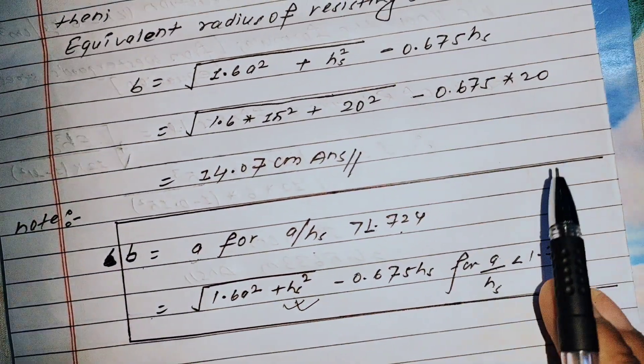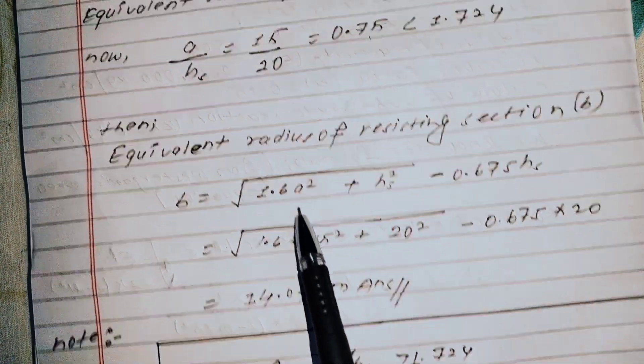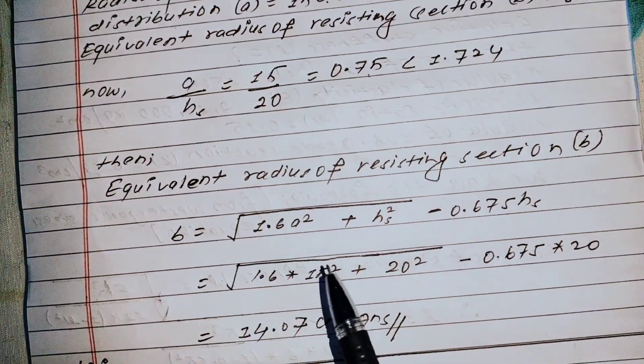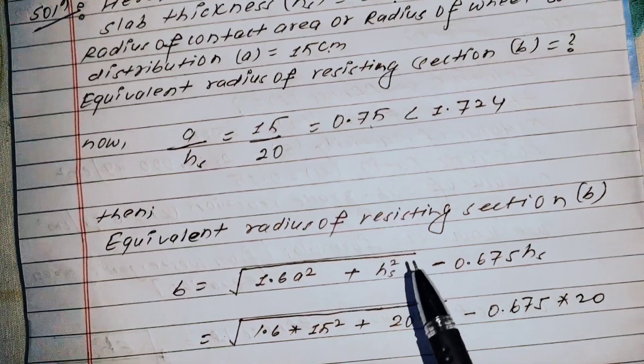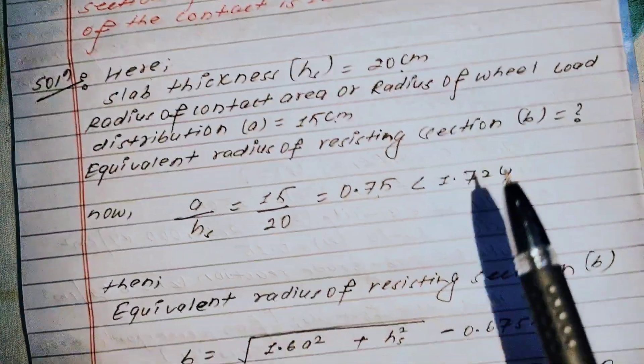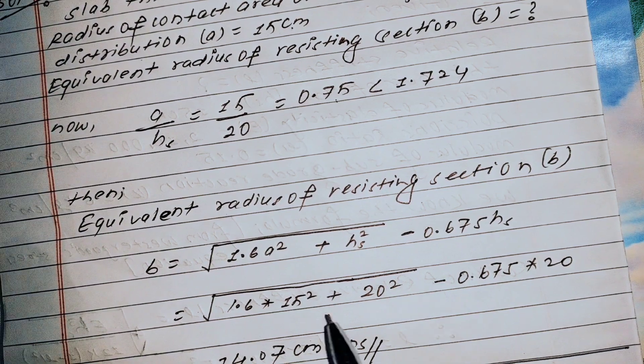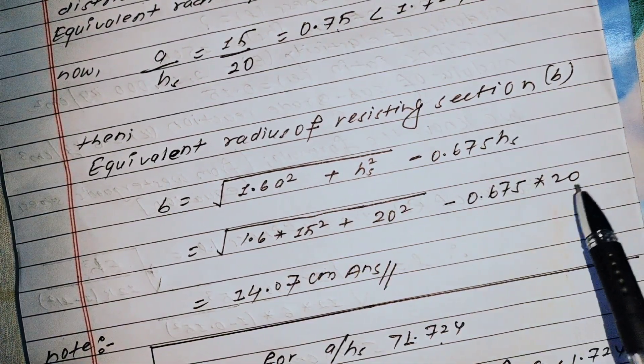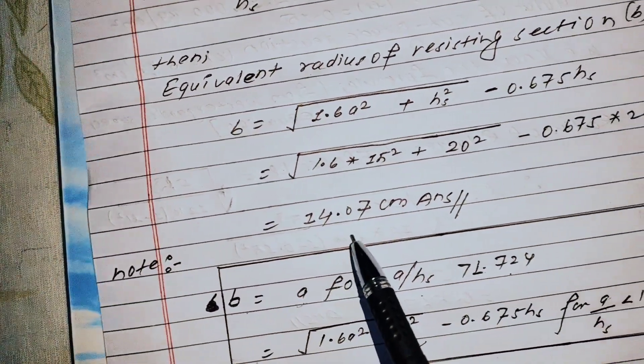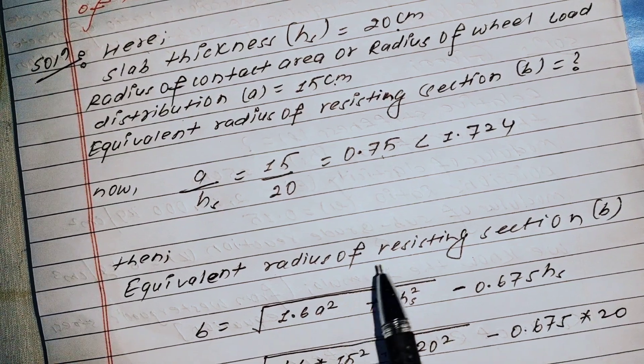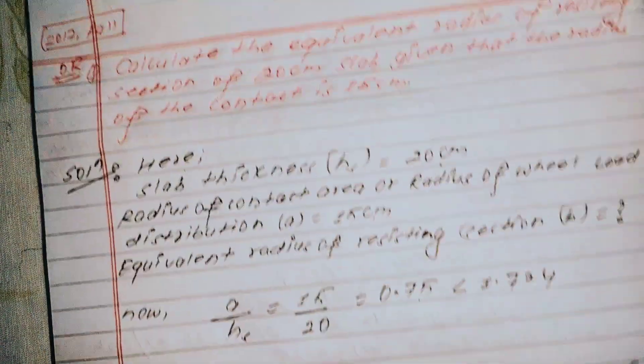Using the formula b = √[1.6a² + h²] - 0.675h, we put a = 15 and h = 20 centimeters into the equation. Calculating this gives us b = √[1.6(15)² + (20)²] - 0.675(20) = 24.07 centimeters as the answer for equivalent radius of resisting section.